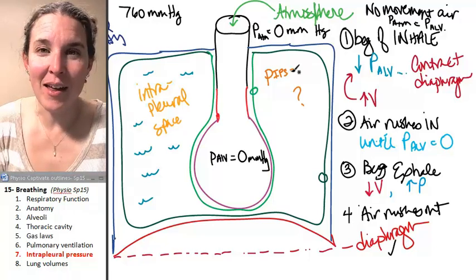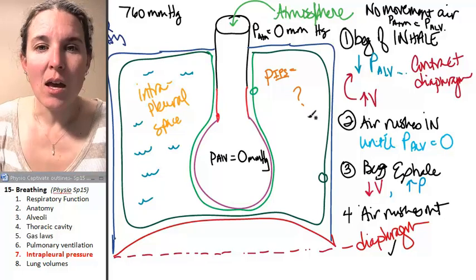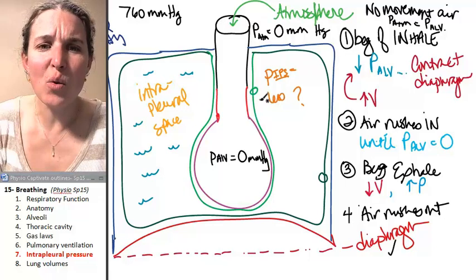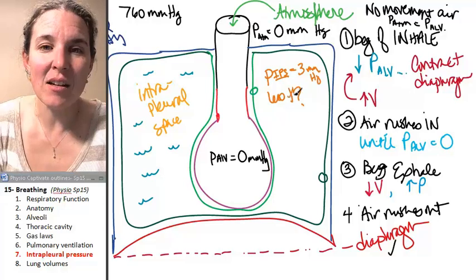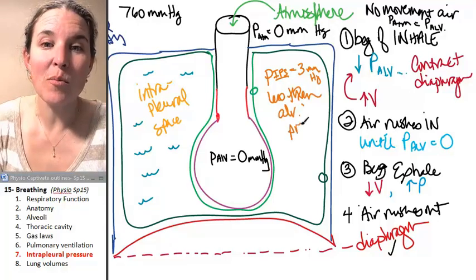I just made that up, so don't ever tell anybody that because it's totally made up. It is always less, maybe three millimeters of mercury less than alveolar pressure. Always.